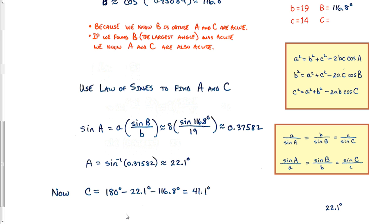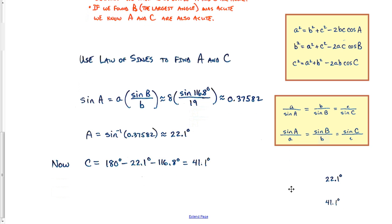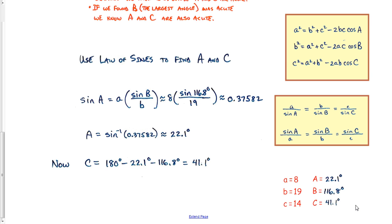Angle C is simple: 180 degrees minus angle A minus angle B, which gives approximately 41.1 degrees. We now have the complete solution. We started with the law of cosines, then switched to the law of sines for simpler calculations, and didn't have to worry about two different solutions for angle A.